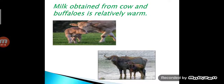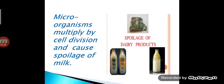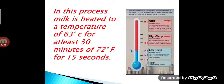Milk obtained from cows or buffaloes is relatively warm. This milk has the ability to absorb microorganisms from the atmosphere. Microorganisms are organisms that are so small that one can see them only through a microscope, which enlarges and makes them look bigger.